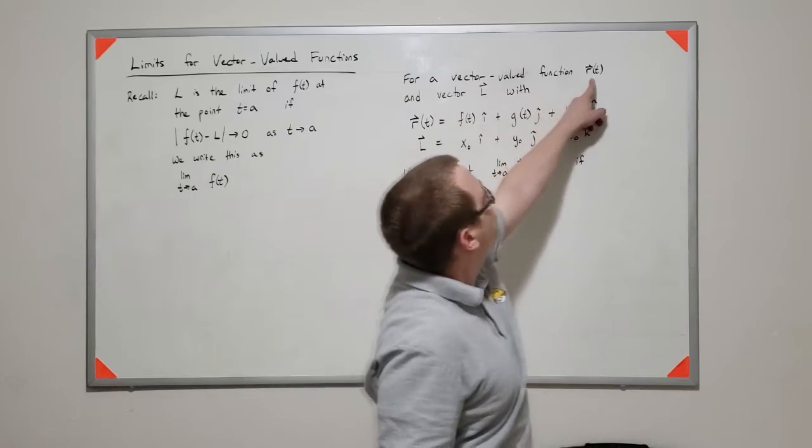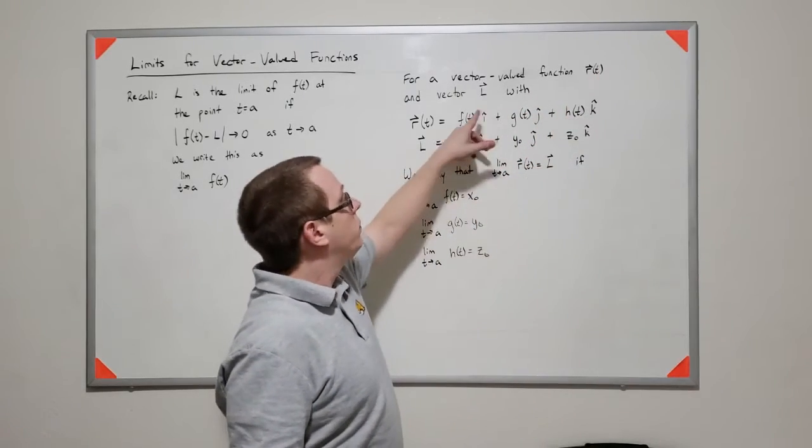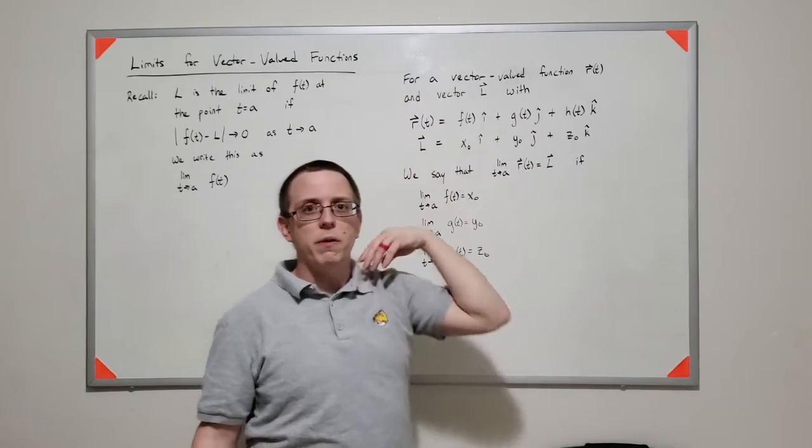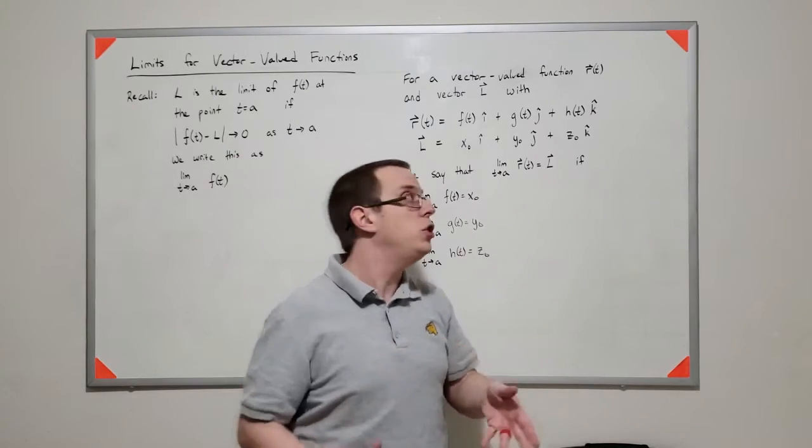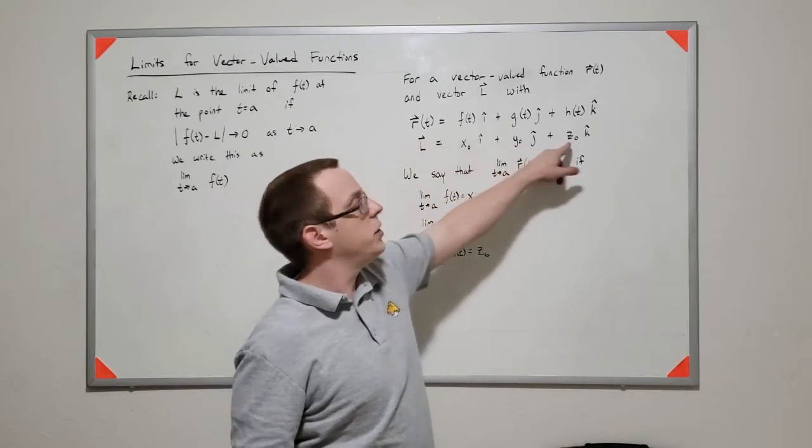So if I have some sort of vector-valued function r of t, and I have some sort of vector L, now this vector doesn't have variables in it, it's some numbers x0, y0, and z0.